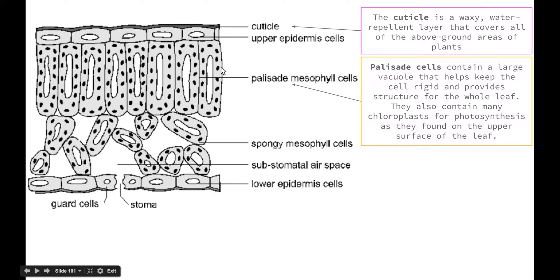The palisade cells also contain lots of chloroplasts which are these little black dots around the outside, so they are integral in the process of photosynthesis. They contain a lot more chloroplasts because they are found closer to the surface of the leaf so they're going to come in contact with a lot more sunlight.